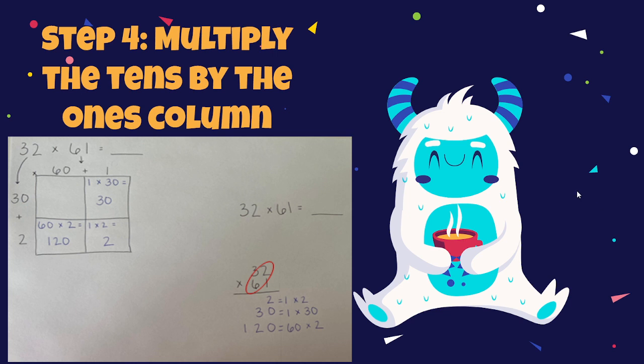Step four, multiply the tens by the columns, the ones column. 6 times 2 will give you 60 times 2, which will give you 120. Again, remember, you've got to do it according to the place value. So instead of 6, it becomes a 60.